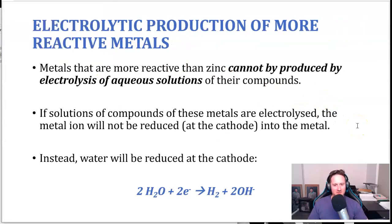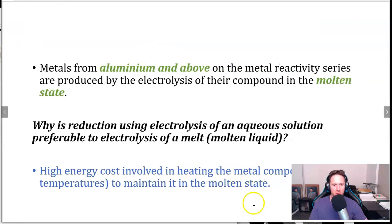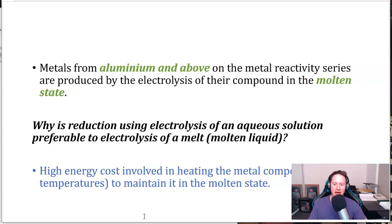Electrolytic production of more reactive metals — those more reactive than zinc — can't be produced by electrolysis of aqueous solutions of their compounds like we showed previously. If solutions of these compounds are electrolyzed, the metal ion would not be reduced at the cathode because water is below them on the activity series; water would instead be reduced to make hydrogen. So there can't be any water present. From aluminium and above on the metal reactivity series, metals are produced by electrolysis of their compound in a molten state, and the disadvantage is the high energy cost required to heat and maintain that molten state.